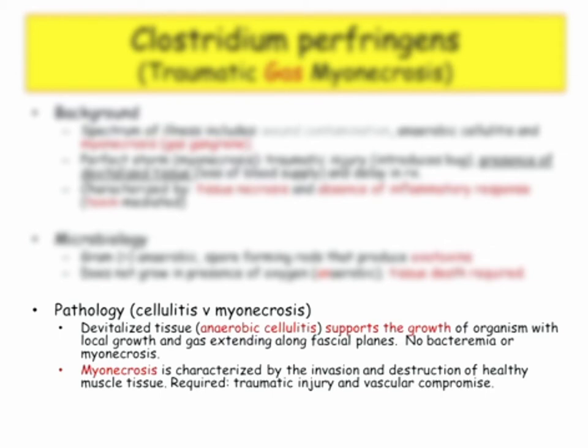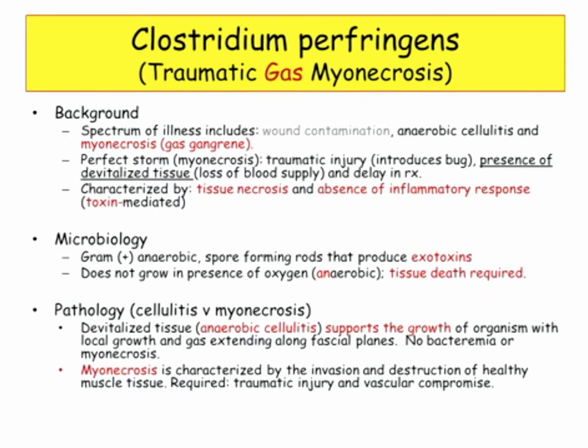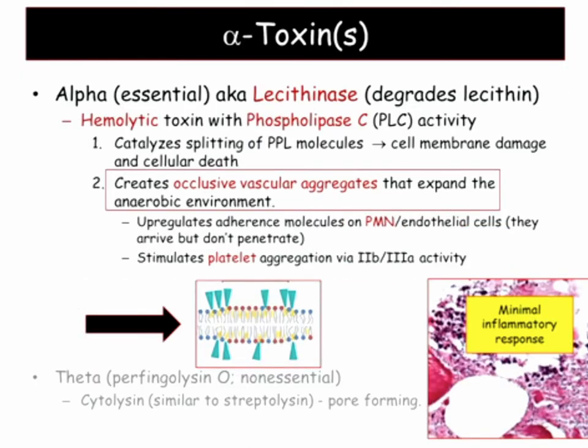Here's the toxin — the one I kept getting wrong. This alpha toxin is referred to as a lecithinase, because it degrades lecithin — essentially phospholipids — so it's a hemolytic toxin, also described with phospholipase activity. Lecithinase, phospholipase activity, alpha toxin: they're all talking about the same thing. It catalyzes the splitting of phospholipid molecules, causing cell damage and cell death.